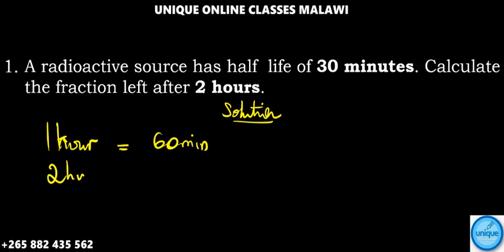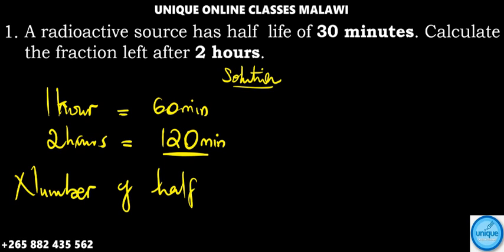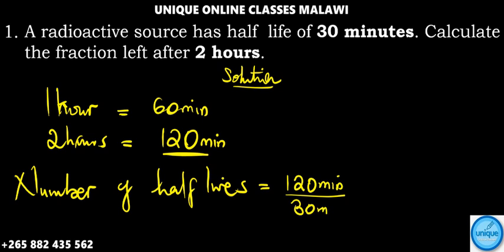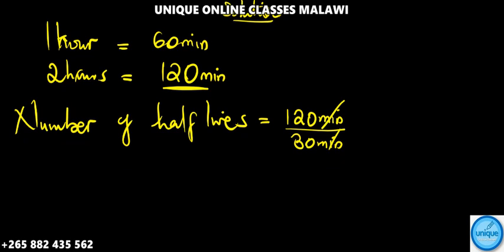We know that one hour equals 60 minutes, so two hours equals 120 minutes. Then we need to know how many 30 minutes are in 120 minutes — that gives us the number of half-lives. Number of half-lives n = 120 minutes ÷ 30 minutes. Minutes cancel, and 120 divided by 30 gives us 4 half-lives.